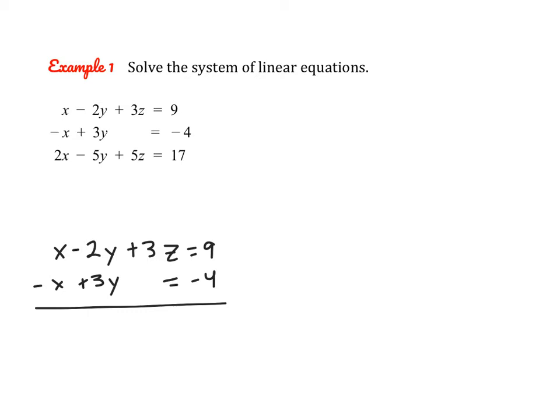And adding vertically, I can eliminate the x values. So that leaves us with y plus 3z equals 5. So I'm going to write this equation up to the right because it's going to be part of our new system.